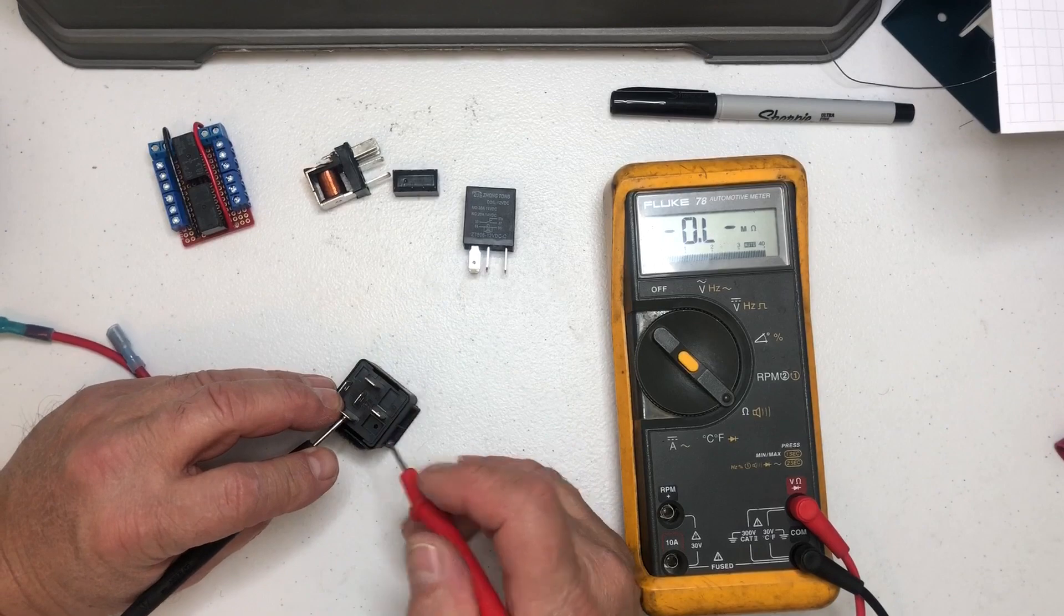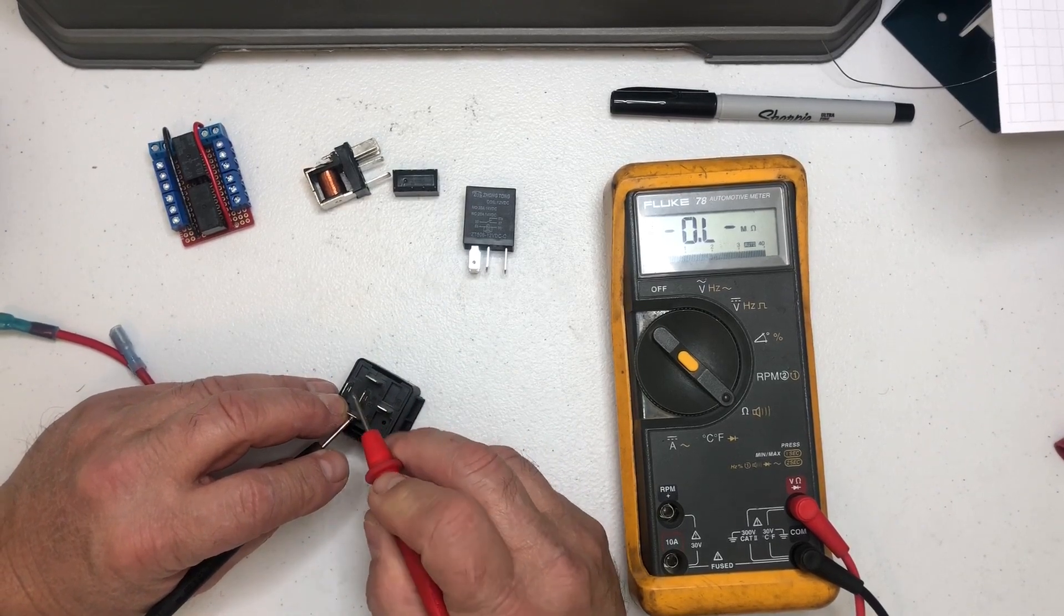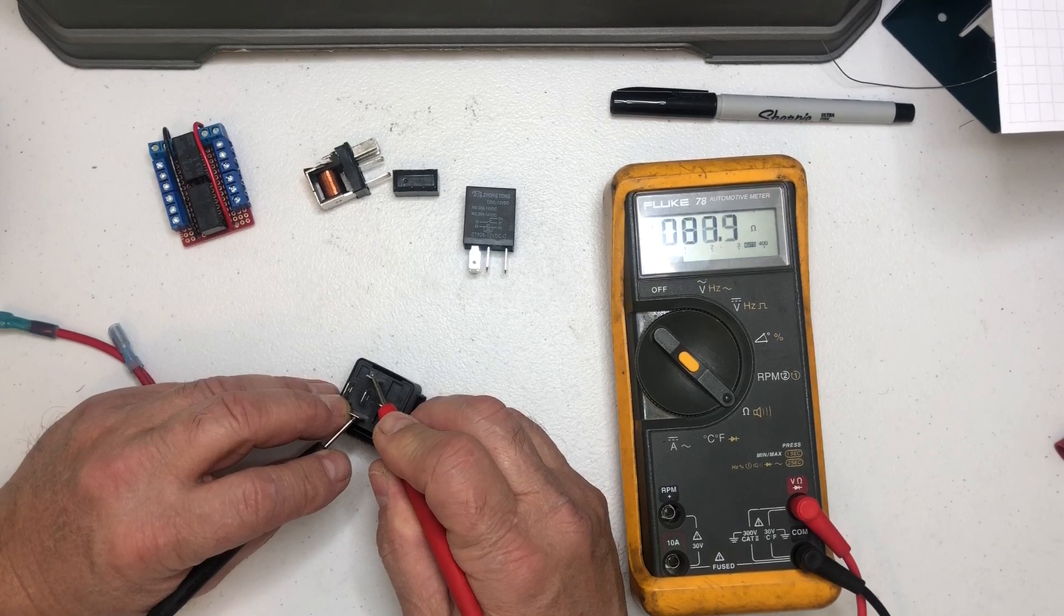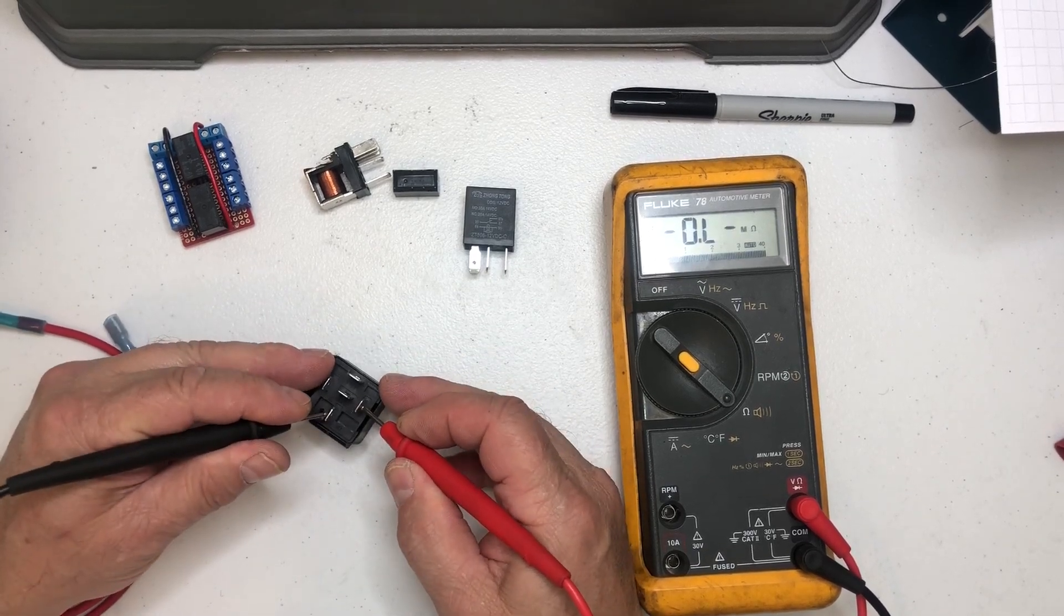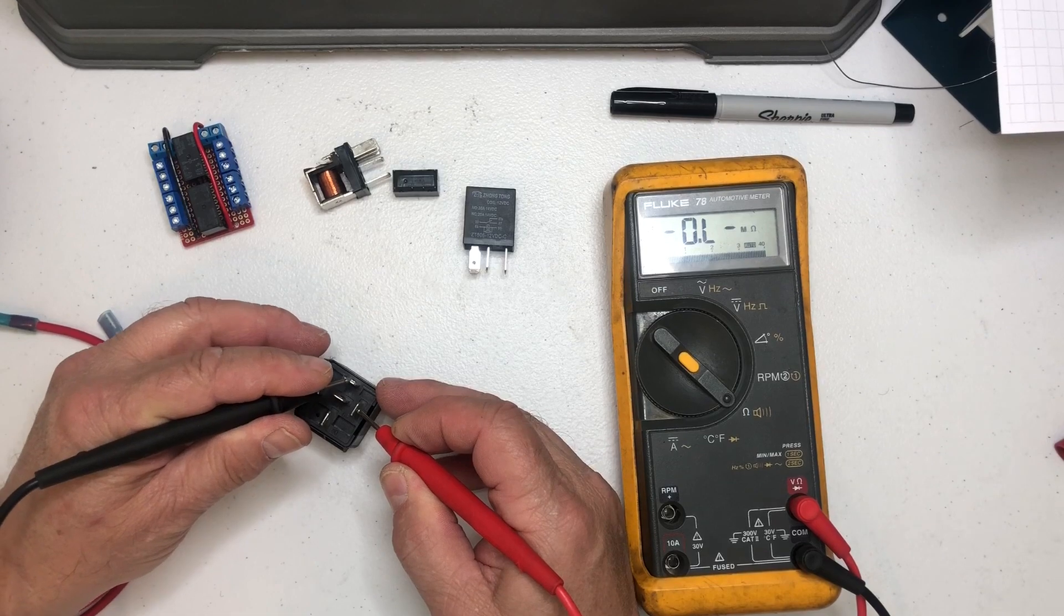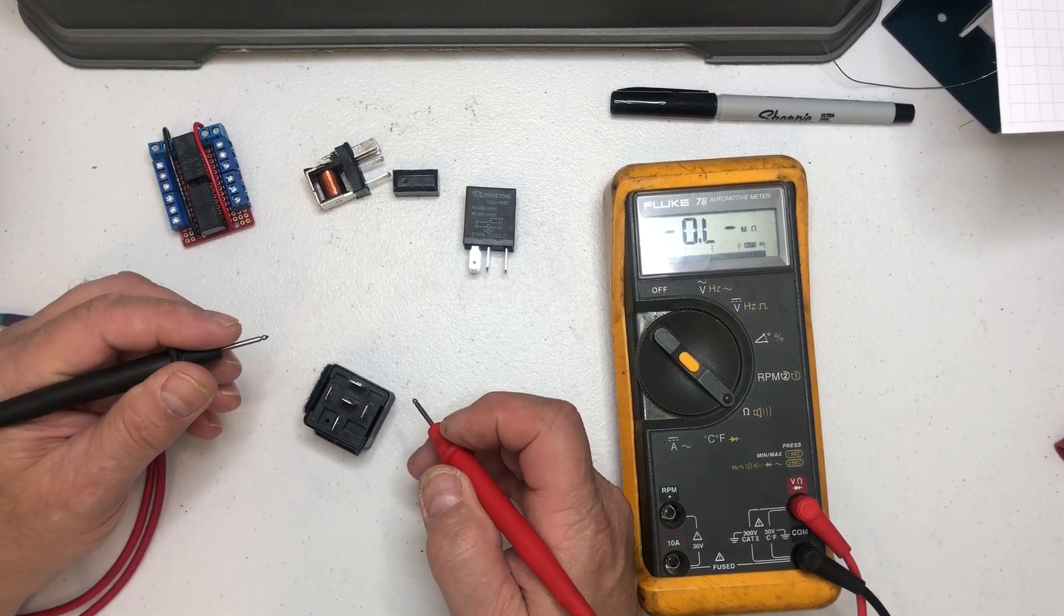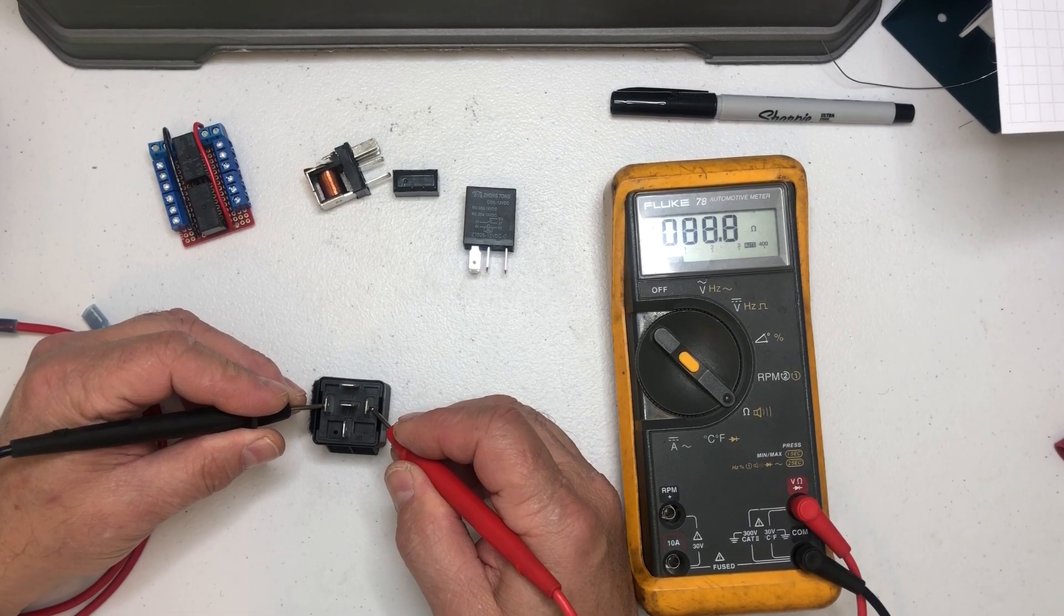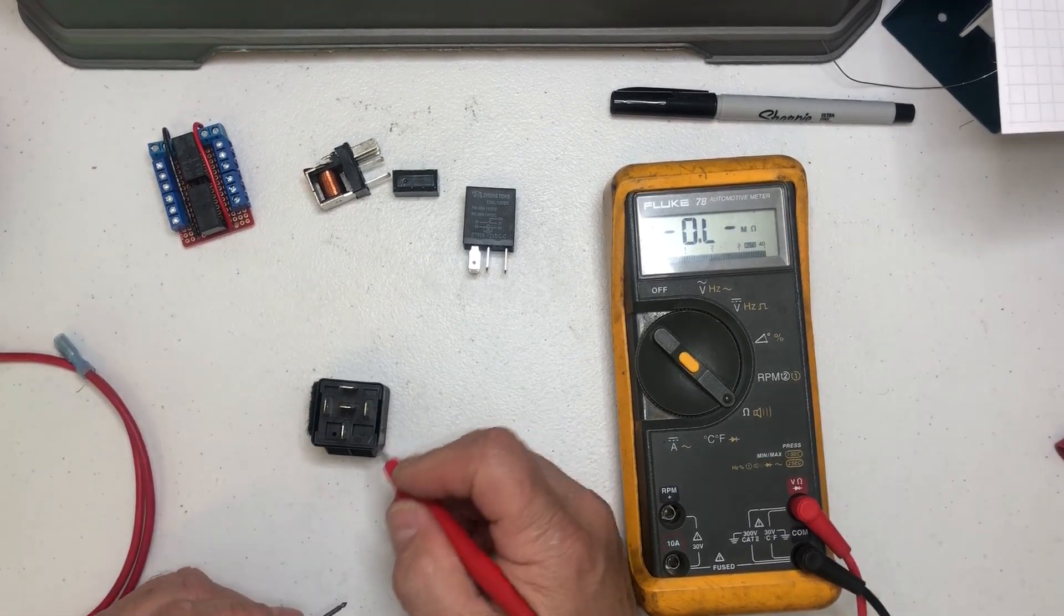So you can go around and you can see this connector here is not connected to anything else but this one. If I do this one it's the same way. See, nothing happened with the meter. Okay, so we've eliminated those two. These are the two we know we need to apply power when we want this to change state.